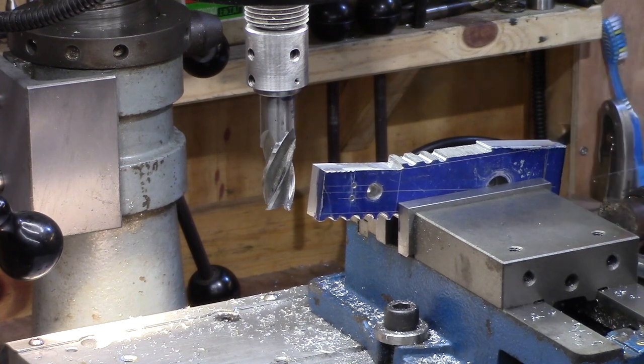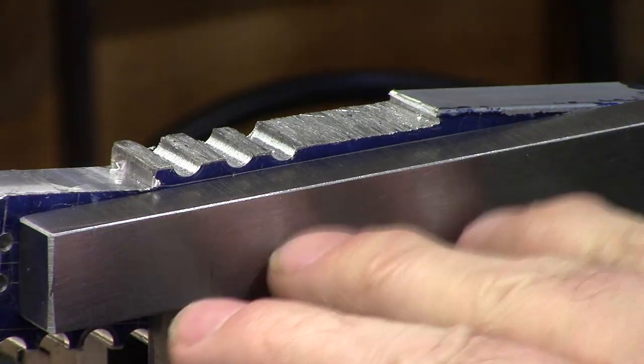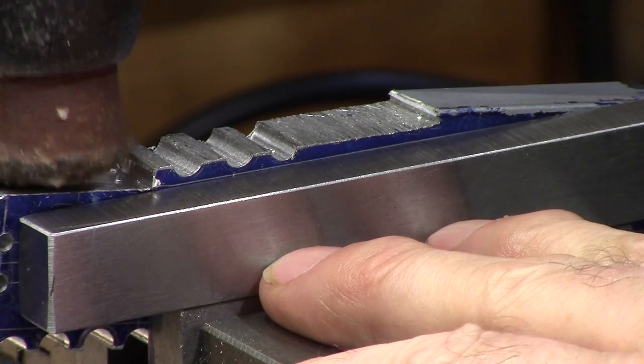The work base was then set on an angle using a parallel as a guide and gently adjusted with the mallet so that the scribe line was perpendicular to the mill.